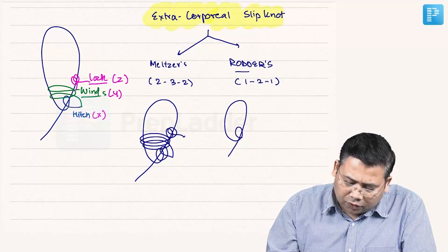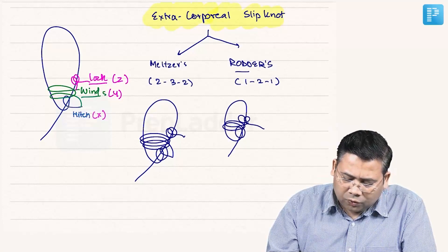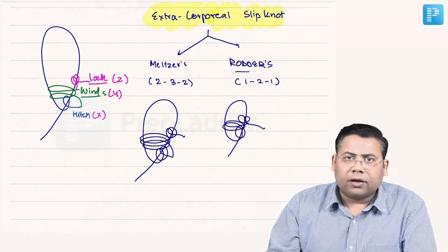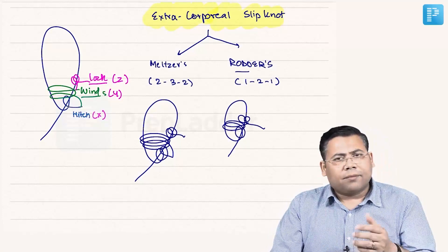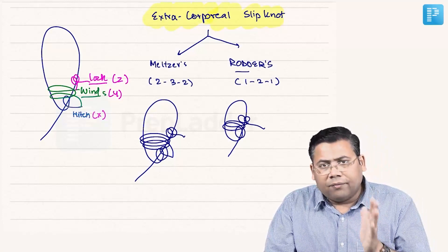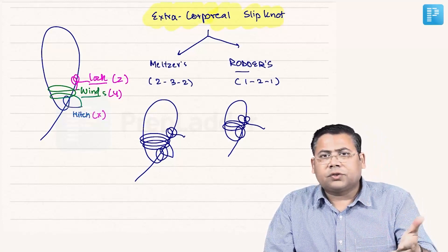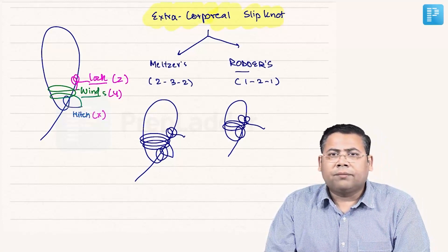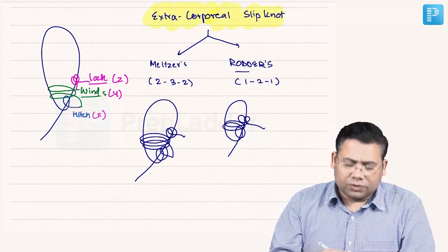The Rodder's knot is structured as one, then two loops, then one. You can check my videos on YouTube where I have made and demonstrated these knots and shown how we make and use them.